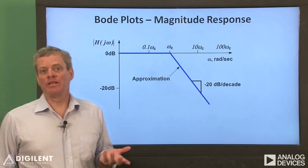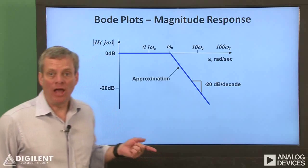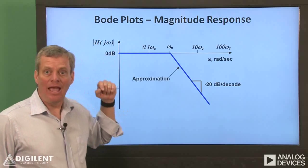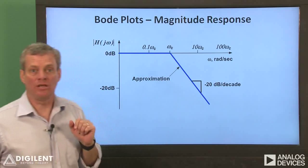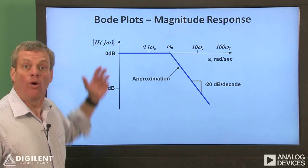Bode plots are often expressed as straight-line approximations. For a first-order low-pass filter, the plot is flat below the cutoff frequency and decreases at a rate of 20 dB per decade above the cutoff frequency. For this particular example, the DC gain is 1 or 0 dB.